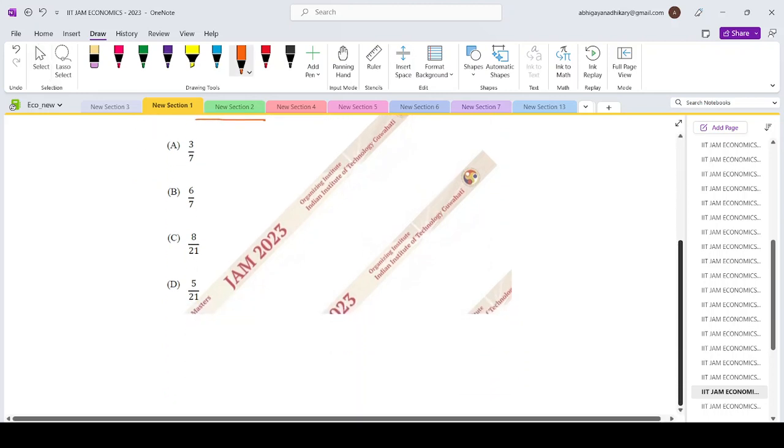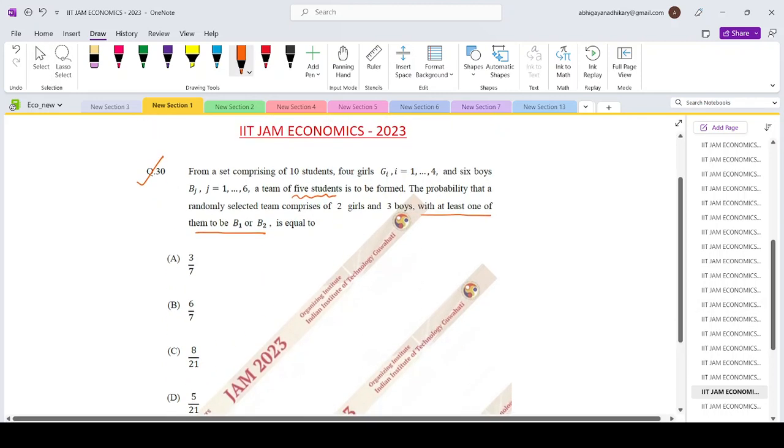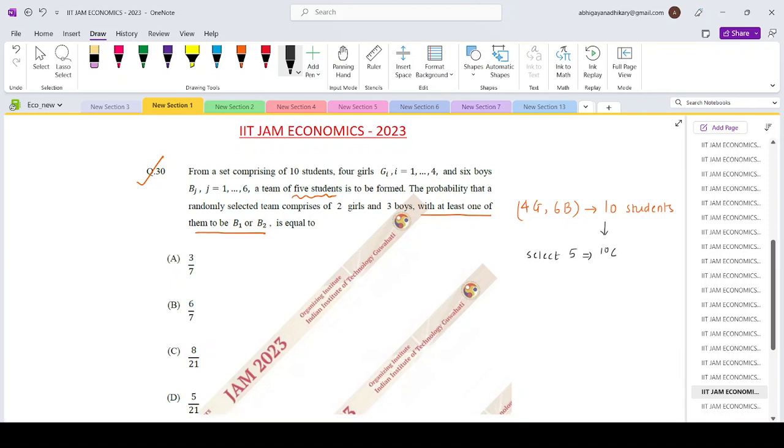There are 4 girls and 6 boys, total 10 students. Out of which we need to select 5. So the total possible ways in which this can be done is 10C5.